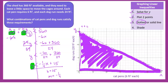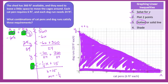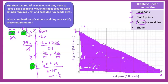Everything in the shaded area represents possible combinations of cats and dogs that fit in the shed. For example: 20 cats and 5 dogs, 10 cats and 10 dogs, 40 cats and 3 dogs, 50 cats and 0 dogs, or 14 dogs and 0 cats — all of those work within the space constraint.